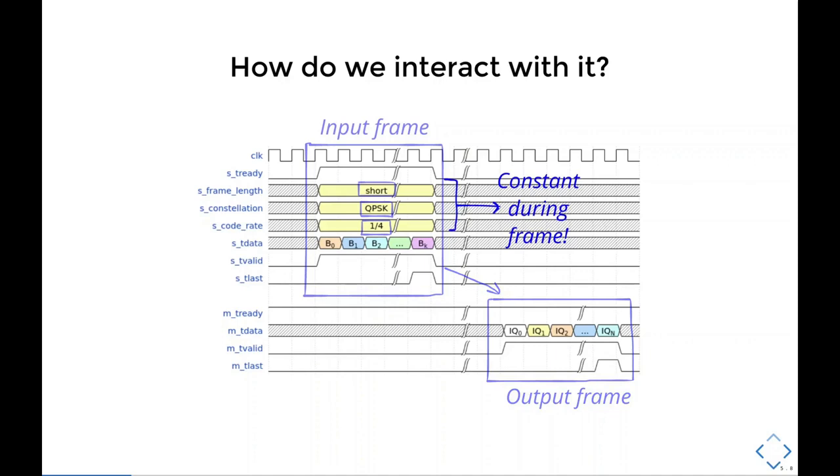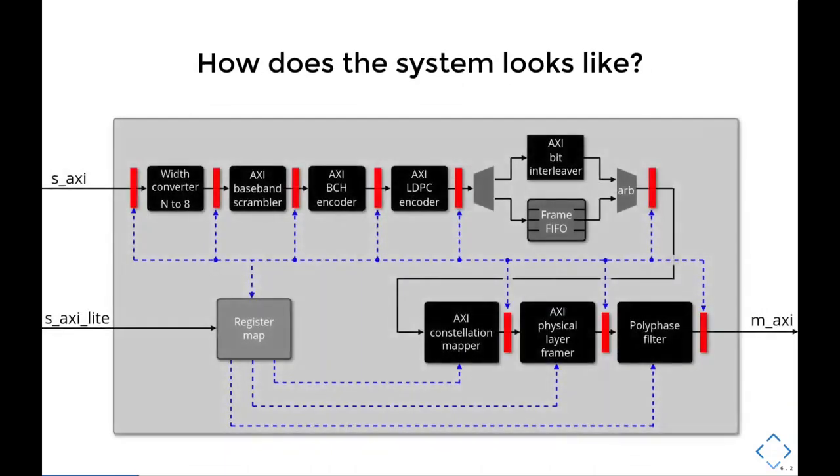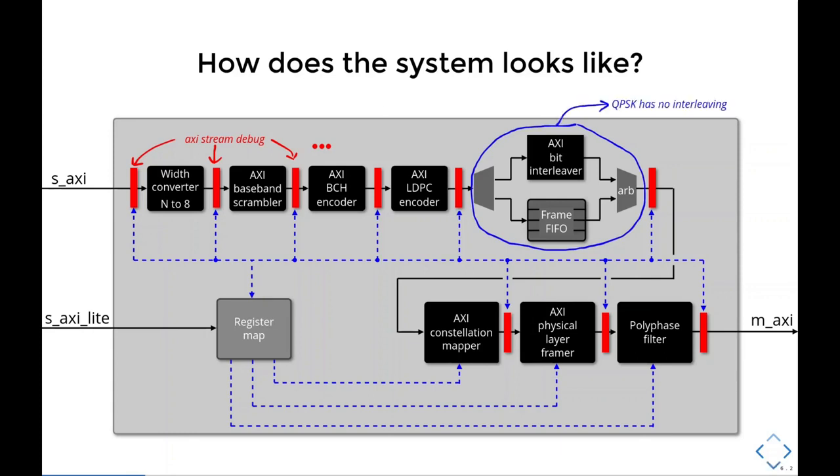And the last part I want to show on the quick intro topic is how does the system look like. This is a high-level block diagram of the encoder itself, as it's implemented in RTL, and it's very similar to the functional block diagram we've just seen. These red blocks here are instances of the axis stream debug, which is the block I mentioned before that allows us to monitor and control the flow of data. A key difference is the presence of this frame FIFO besides the bit interleaver, and it's used for QPSK frames because QPSK has no bit interleaving.